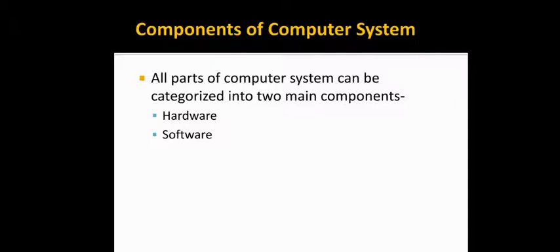Computer system is an electronic device which is set up with different components to perform a particular task. When we connect different input or output devices to each other to perform a particular task. All parts of computer system can be categorized into two main components. First category is your hardware and second one is your software.